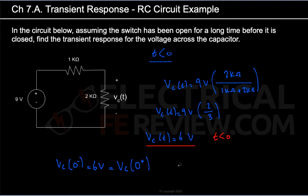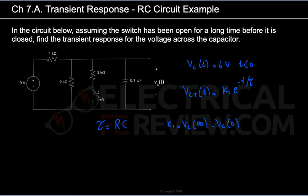This is very important: the voltage across the capacitor does not change instantaneously. So Vc(0⁻) = Vc(0⁺) = 6 volts. Now we need to find Vc(∞) — the steady-state response after the switch has been closed for a very long time. At T = ∞, the capacitor again acts as an open circuit, but this time the switch is closed, so the 2kΩ resistor is included in the circuit.